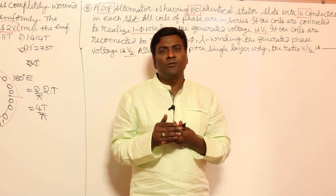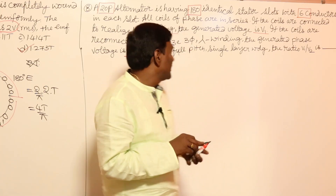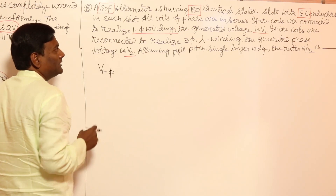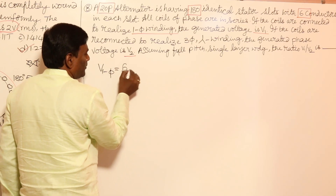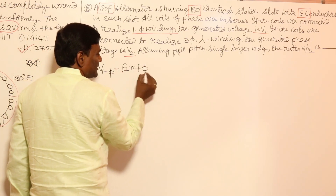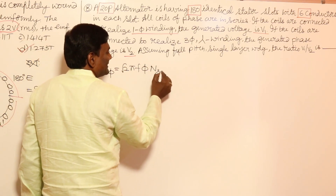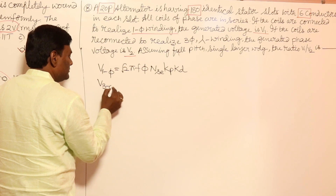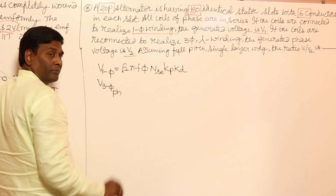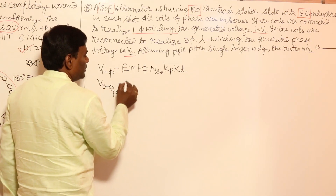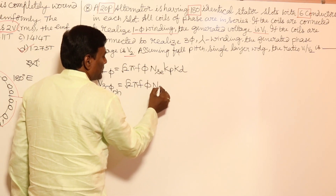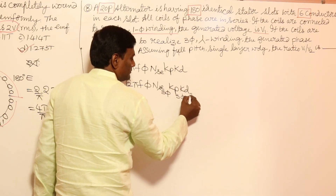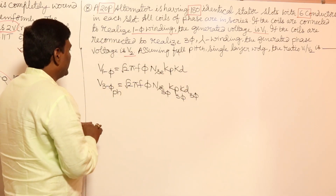We will find the answer first and then explain the purpose of this question. The induced voltage for single phase V1 = √2 · π · f · φ · N_series · kp · kd. Similarly for three phase, V2 (per phase) = √2 · π · f · φ · N_series(3φ) · kp(3φ) · kd(3φ).